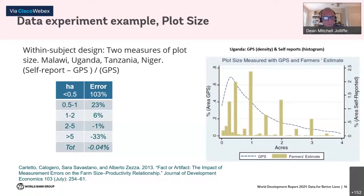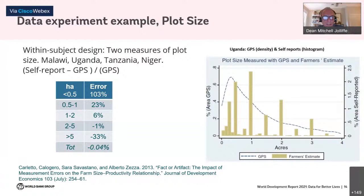The key finding was that holders of small plots tended to over-report the size of their plots — making themselves look better off — while holders of large plots tended to underestimate the size of their plots, making themselves look less well off. On average the difference didn't look so large, but what typically looks like heaping on common sizes — a very common shape of measurement error — the experiment revealed is actually systematic error, with pretty significant implications for analytical work.